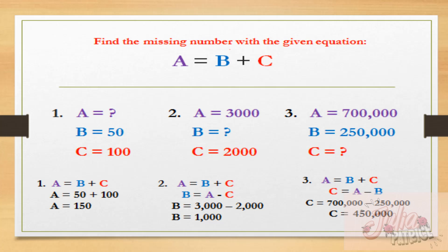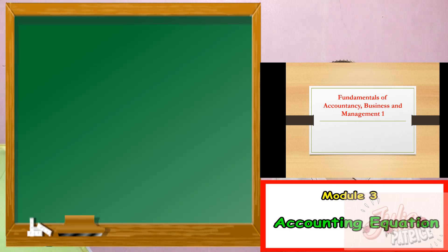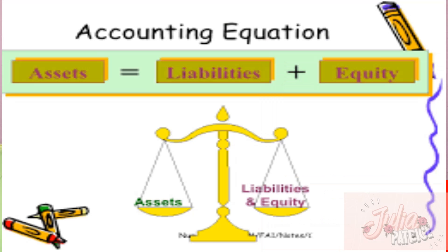In number two, B is missing. So we transfer B to the left side and A to the right side, with the equation B equals A minus C. Therefore, 3,000 minus 2,000 equals 1,000. The same concept is applied with our lesson for today, which is the accounting equation.